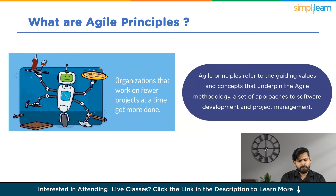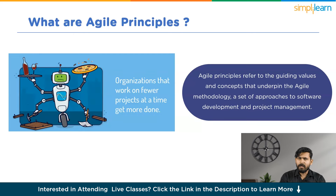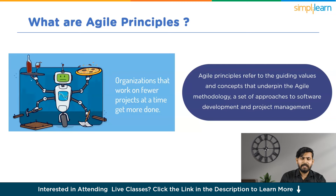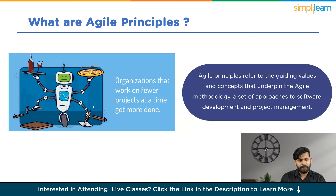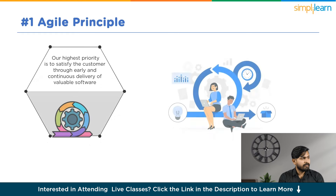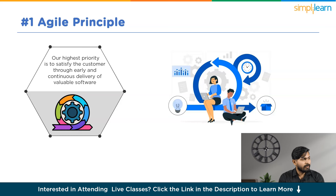Now let's move on and discuss one by one what are those 12 Agile Principles applied in today's software industry. Here is our first Agile Principle: our highest priority is to satisfy the customer through early and continuous delivery of valuable software.